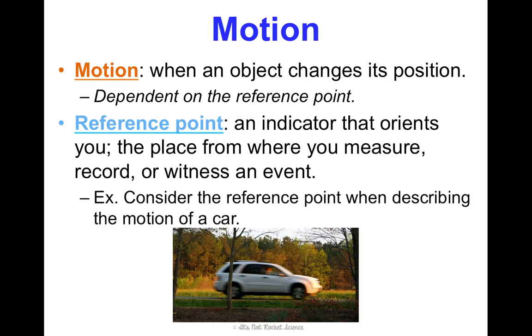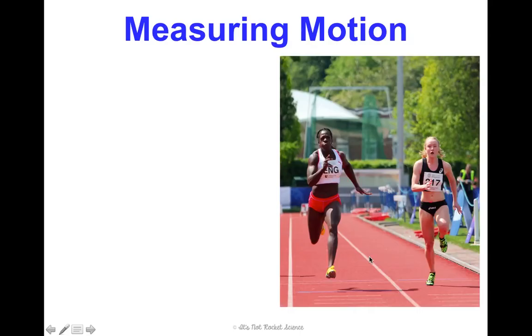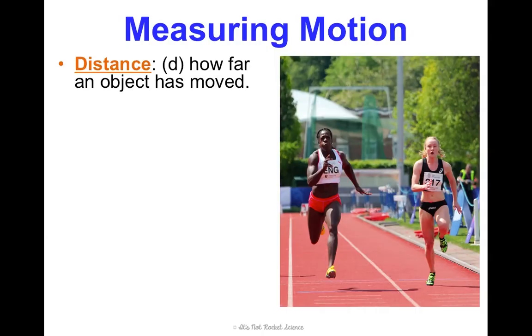So reference points are critical for understanding and being able to describe the motion of an object. In relationship to the tree outside of this car, the person is moving. In relationship to the car itself, the person inside may not be moving. And so that's where reference points come in. Two ways that we often describe motion, or that we even measure motion, are distance and displacement.